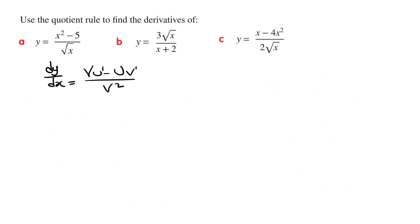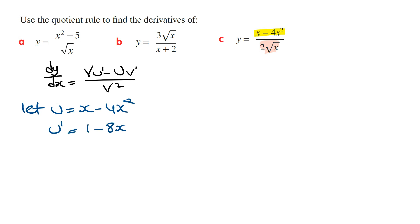Part C: y is equal to x minus 4x squared over 2 times the square root of x. We're going to let u be the top function and v be the bottom function. If u equals x minus 4x squared, then u dash is 1 minus 8x. v is 2 times the square root of x, written as 2x to the power of a half. Deriving this, a half times 2 is 1, so v dash is x to the power of minus a half.